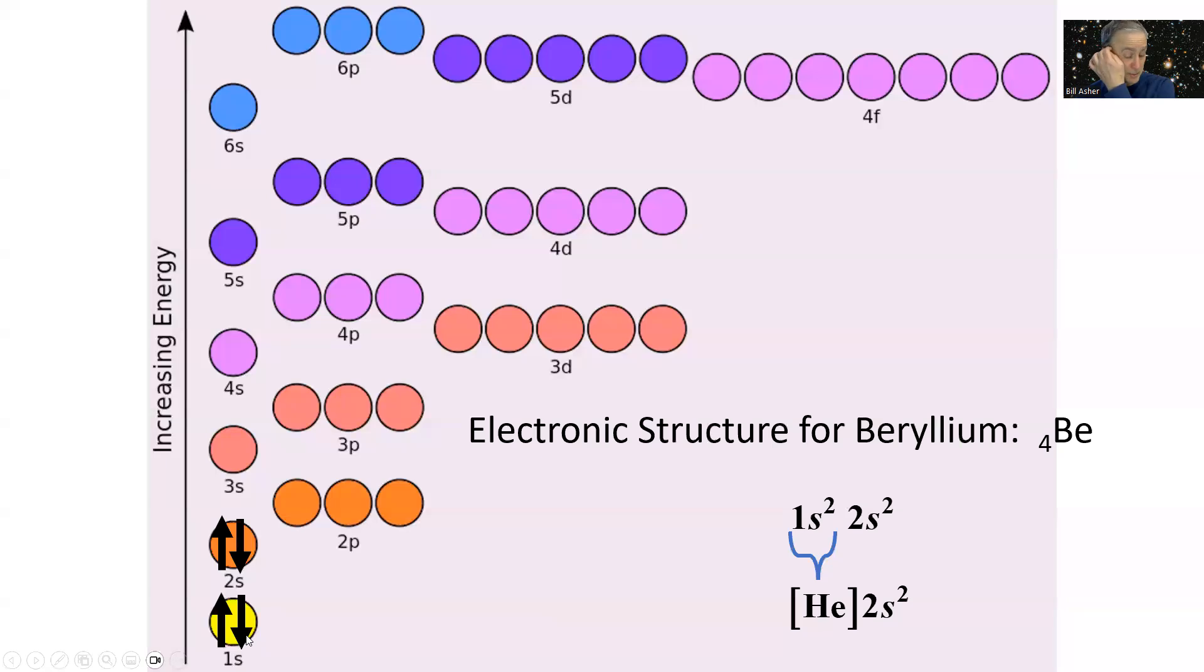We get two electrons which completely fill the 1s level, and then two more electrons for four total. So we would write the electronic structure of beryllium as 1s² 2s². There's an alternative format using the noble gas format.